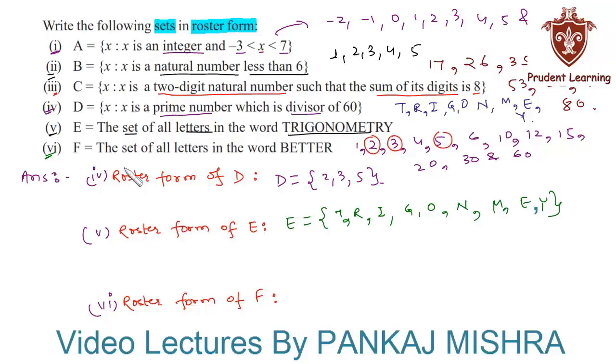F is equal to the set of all letters in the word BETTER. The elements of set F are B, E, T, and R. We have not repeated E and T because we know that elements of a set are not repeated while writing them in roster form. So set F can be written as F = {B, E, T, R}. This completes our solution.